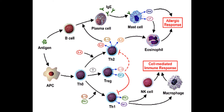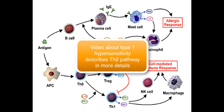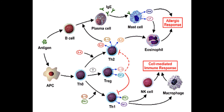If the APC sends interleukin-4, the null T-helper cell will differentiate into Th2, which then activates B-cells and converts them to plasma cells, releasing lots of antibodies for allergic response and bacterial protection. This is discussed in more detail in the video about type 1 hypersensitivity.